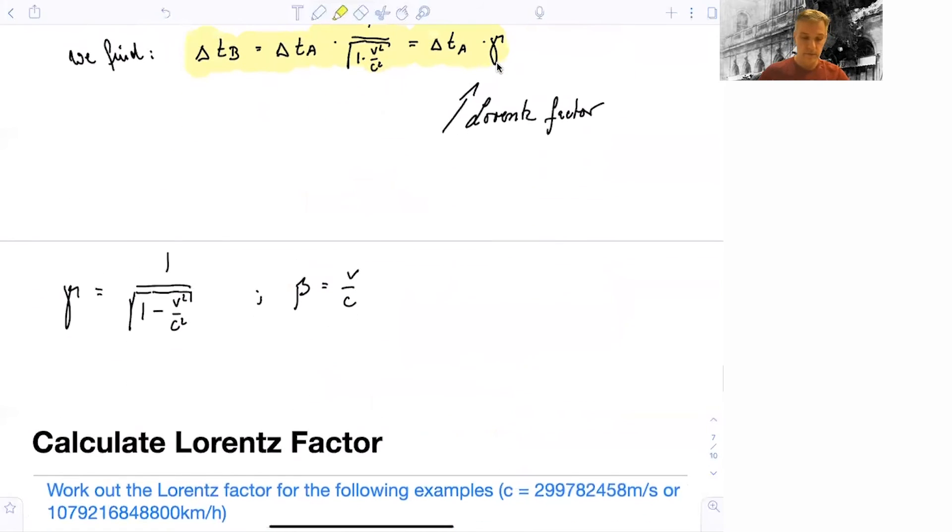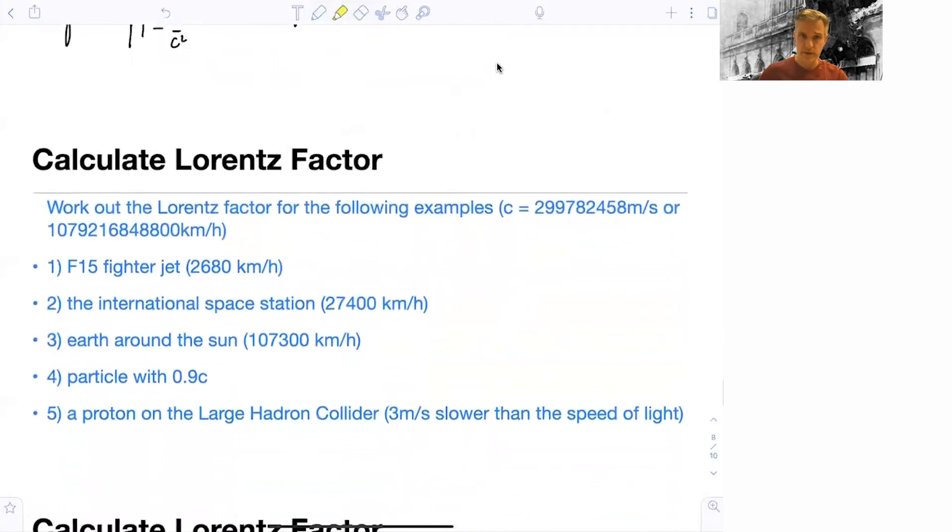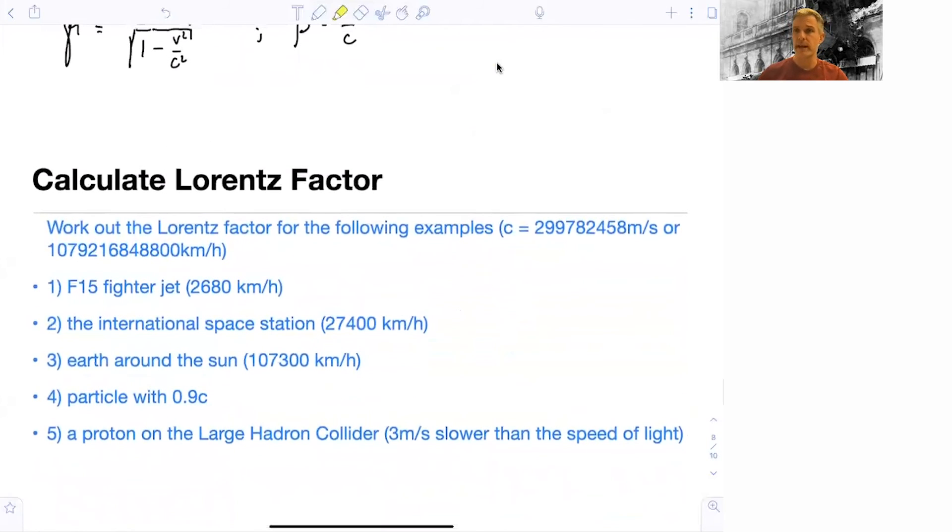So again, gamma is 1 over square root 1 minus V square over C square. We often use, in short, beta as a relativistic velocity. It's unitless and defined as V over C. Gamma is always greater or equal 1. And it's mostly 1 for everything we observe in nature. So in one of the problem sets, and also here I invite you to simply calculate values for gamma for things you might think are fast-moving objects.